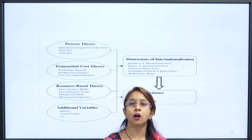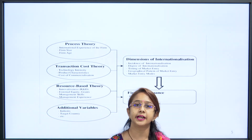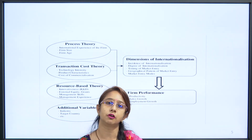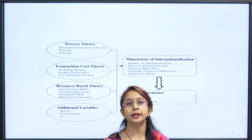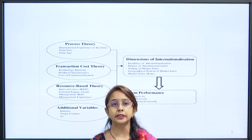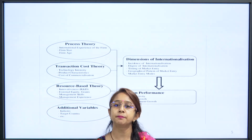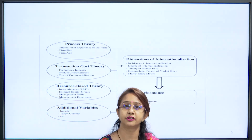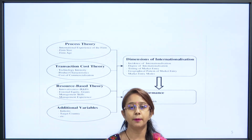The process theory says that internalization depends on the firm's size and age. Internalization can only be done if the size of the firm is large enough to sustain various functions of the production process and international trade. It is applicable only to companies that are rich in research and development and have enough capital to expand and differentiate their product. In this theory, three kinds of resources are important: transaction cost, resource-based theory, and additional variables.